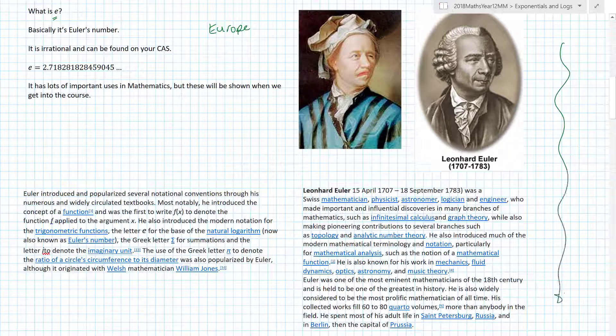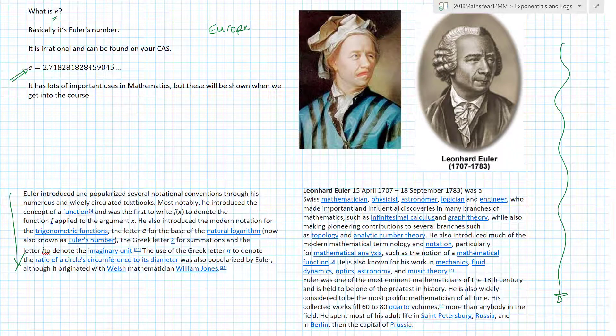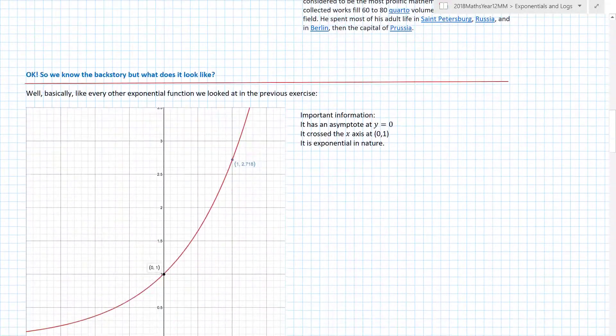Who is Euler? There we go, ladies and gentlemen. All I've done is taken stuff from Wikipedia, so thanks Wikipedia. He was a pretty awesome guy and there was a little bit more about him if you are really interested. But he came up with this number and it's irrational - it goes on and on forever and basically is on your CAS. It has lots of uses in mathematics but we'll show those a bit later on when we get into the course.